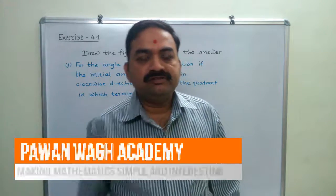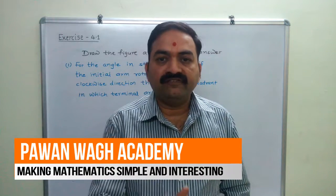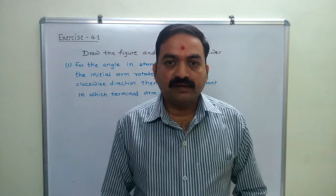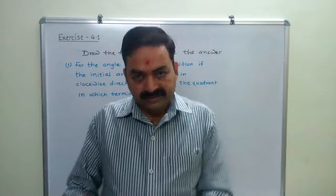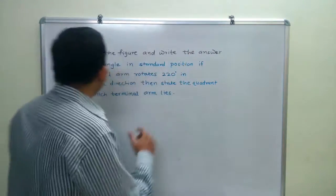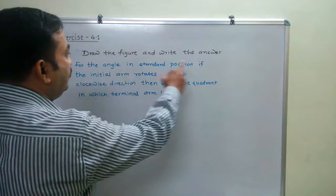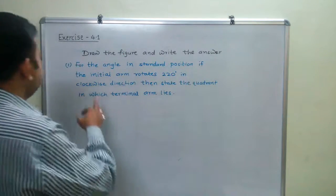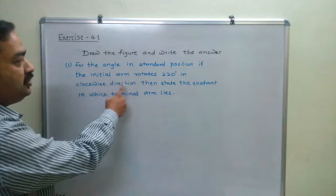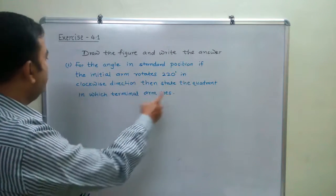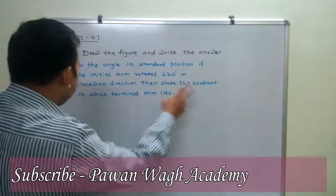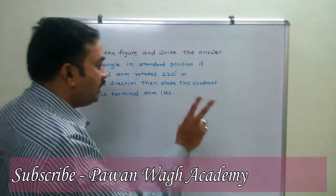Now we will solve some questions based on the definition of directed angle and the definition of the standard position angle. The question is: draw the figure and write the answer. For the angle in the standard position, if the initial arm rotates to 220 degrees in the clockwise direction, then state the quadrant in which the terminal arm lies.